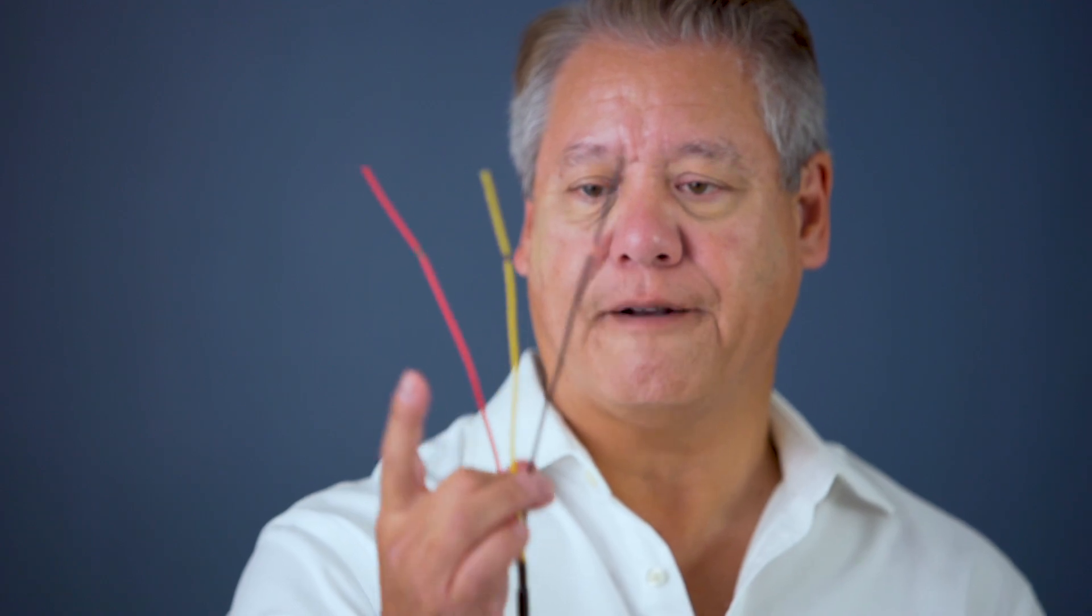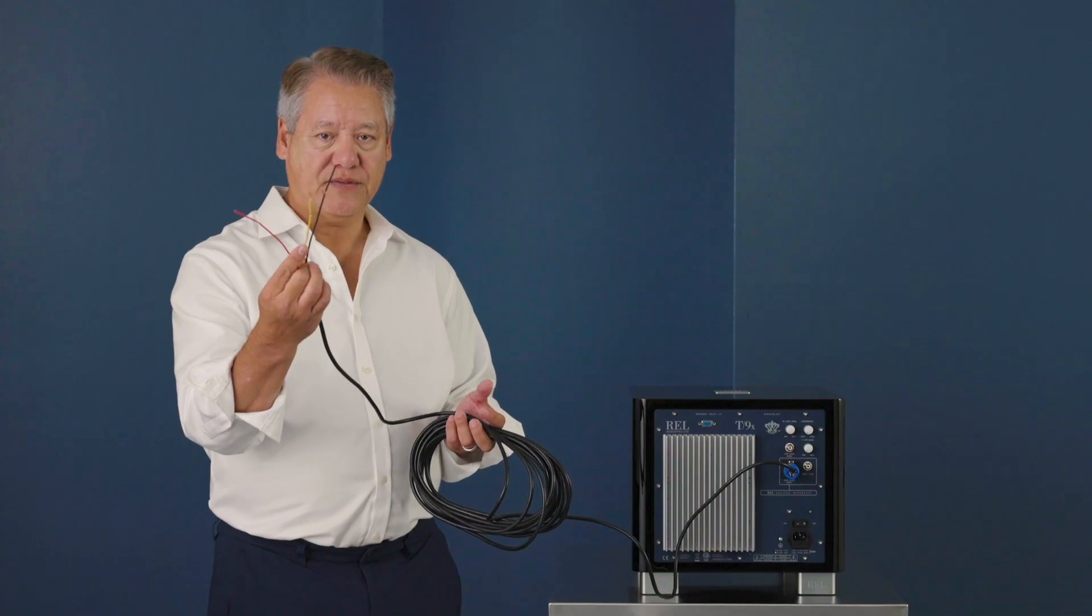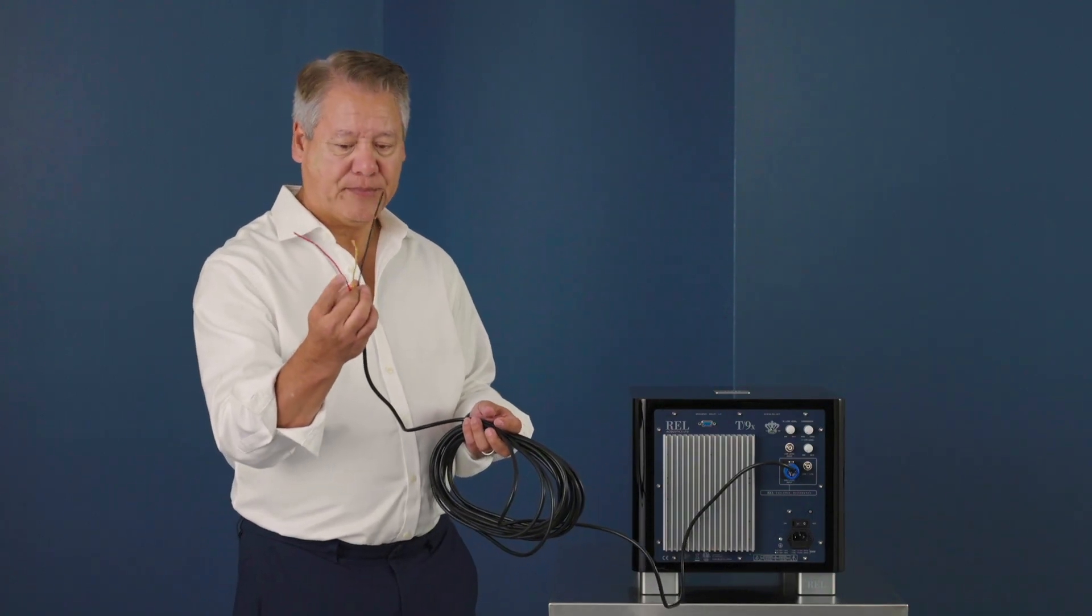So we have two hots. Hot colors are hot—red is hot, yellow is hot. Red traditionally is used for right channel. Red is right, and yellow goes to left channel. Not ground, excuse me—hot, hot, hot.